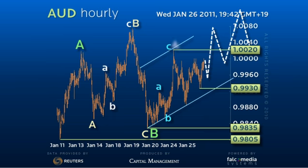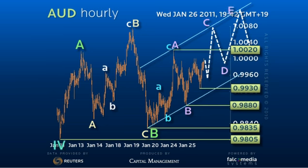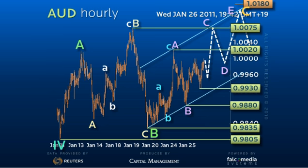Thus, look to buy dips expecting the 9880 to 9930 support area to hold for a more serious attempt at the 10075 peak, and possibly an extension back to the original 10180 target.